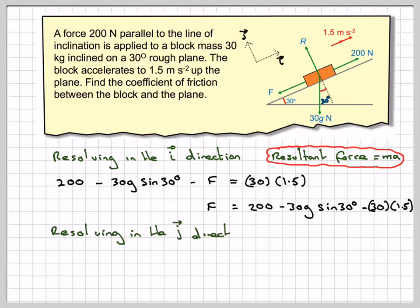Resolving in the J direction, we've got R going upwards minus 30G cos 30 for this length here, and that's going to be equal to 0. That gives us R will be equal to 30G cos 30.